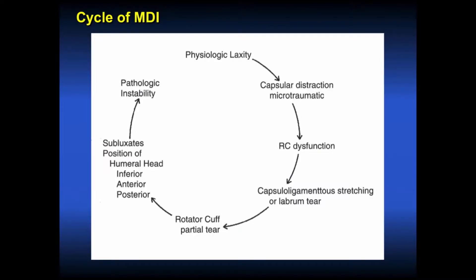The cycle of multidirectional instability begins with physiologic laxity, then capsular distraction from microtrauma, then rotator cuff dysfunction, creating increased instability in the shoulder. This leads to capsuloligamentous stretching of the labrum, causing perhaps a labrum tear or interstitial stretching of the capsule, a rotator cuff partial tear, subluxation of the humeral head inferiorly, anteriorly, or posteriorly, and ultimately pathologic instability.